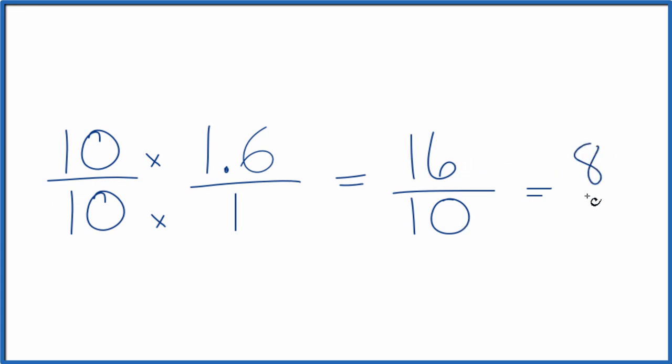10 divided by 2 is 5. So we've simplified this down to 8 fifths. The decimal 1.6 equals the fraction 16 tenths or 8 fifths.